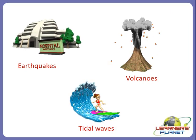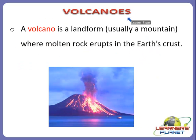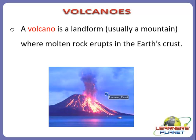Let us start with the first natural disaster: volcanoes. A volcano is a landform — usually a mountain — where molten rock erupts through the earth's crust. Volcanoes are cracks in the earth's crust from which molten magma comes out. Magma is very hot liquid rock inside the earth.